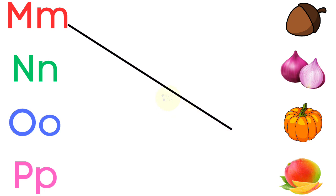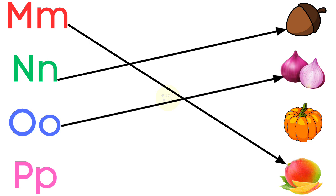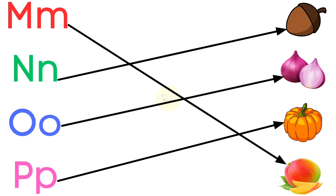M for mango, N for nut, O for onion, P for pumpkin.